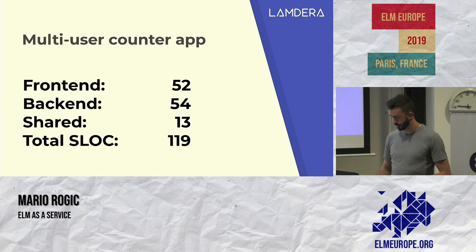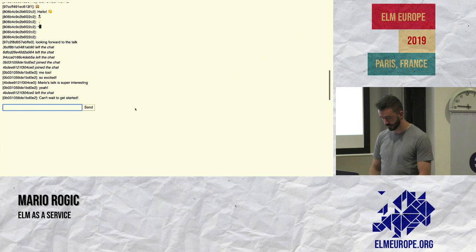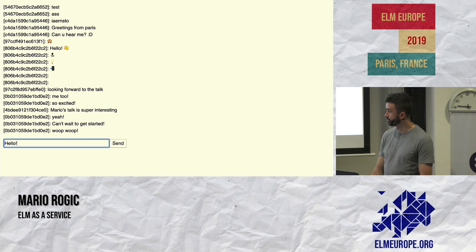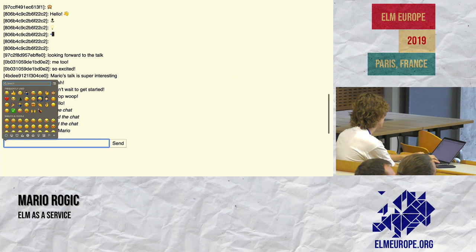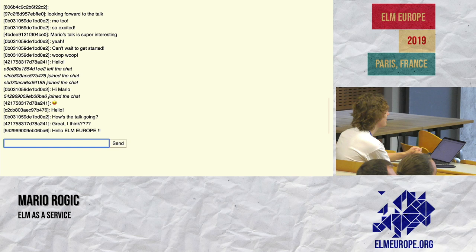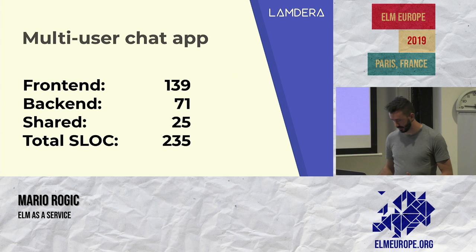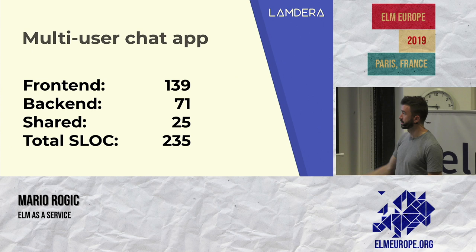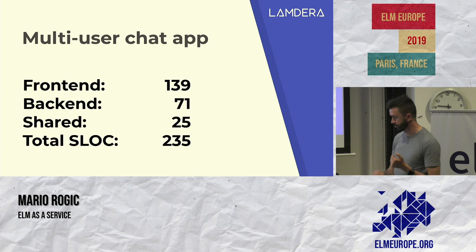Next up is a multi-user chat app. We've got chat, we can put in emojis. That's a quite straightforward app — in total it's only 230 lines of code, including the logic and the front end UI. Again, the back end is quite slim and stuff is shared. Some of these code examples will be up afterwards and you can come and take a look at them.